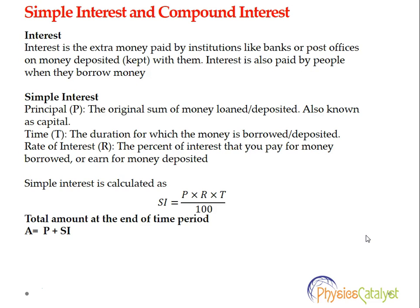Simple interest is calculated as SI = P × R × T ÷ 100. The total amount at the end of the time period is given by Amount = Principal + Simple Interest. So if you are taking a loan for two years, the simple interest would be given by Principal × R × 2 ÷ 100.